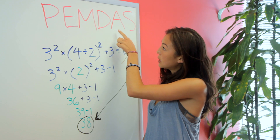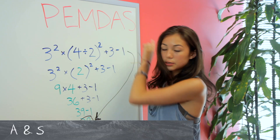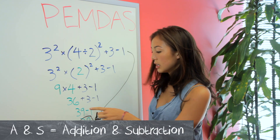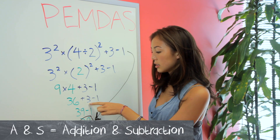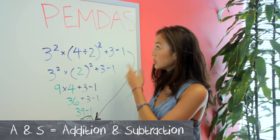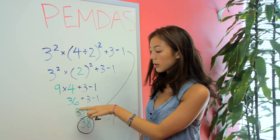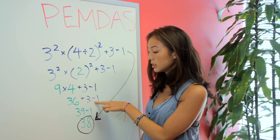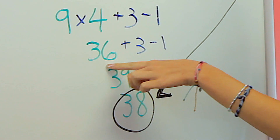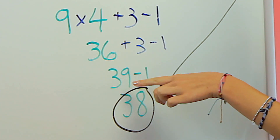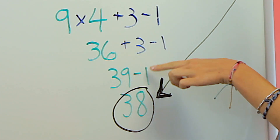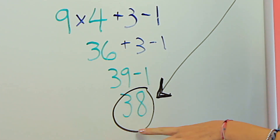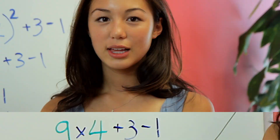And the next step is addition and subtraction. It doesn't really matter what order those go in. So we have 36 plus 3: 39. Then minus 1: 38. Thanks for watching, and if you want to learn more about math, please subscribe.